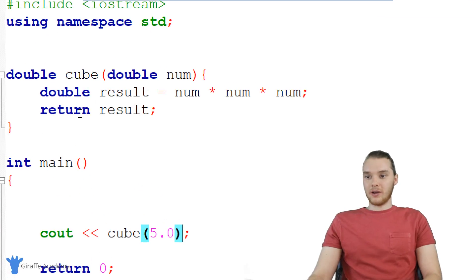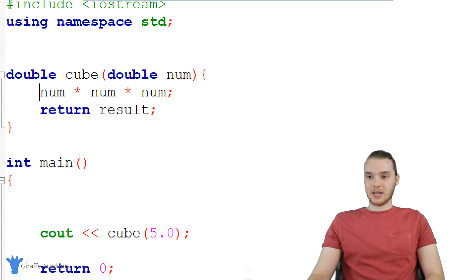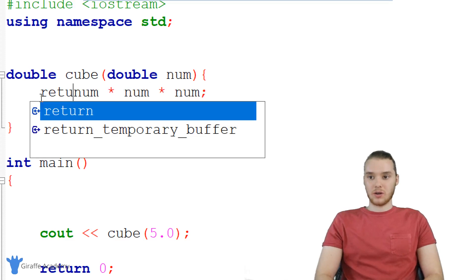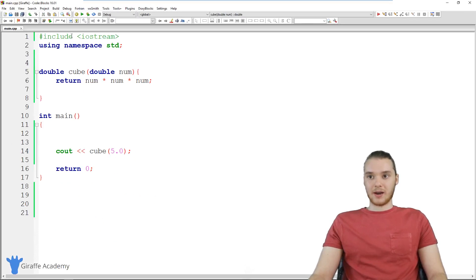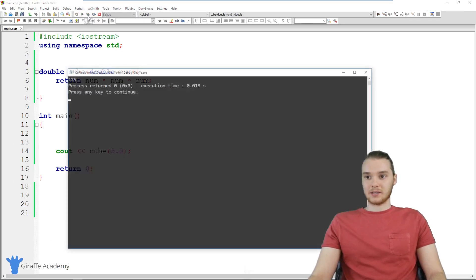And actually up here, if we wanted instead of storing num times num times num inside of this result variable, I could instead just return these guys up here. So we can cut out the middleman and we'll just return that and we should get the same exact answer.